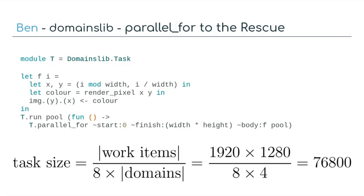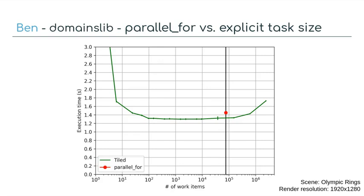You could also consider each row to be a single work item. This would divide that number by one thousand nine hundred and twenty. So we can compare what parallel_for chooses compared to the tiled example we had before. Considering each pixel as a separate work item, the black line is where parallel_for chooses to place it. We can see that if we explicitly set the chunking size, we get a slightly lower execution time. That is specifically due to the way that parallel_for distributes the work.